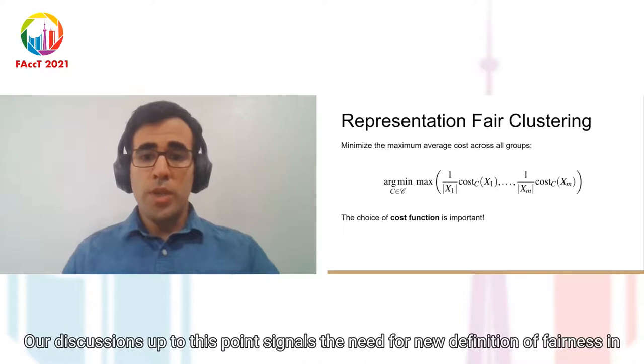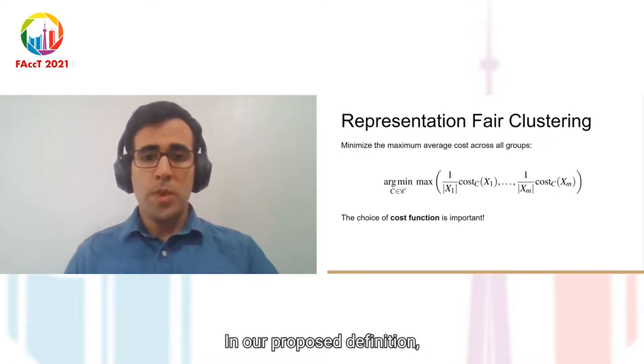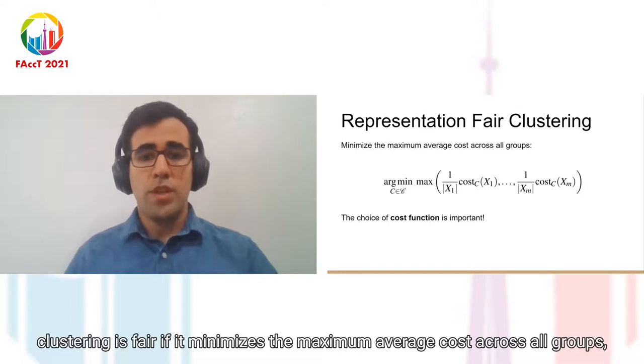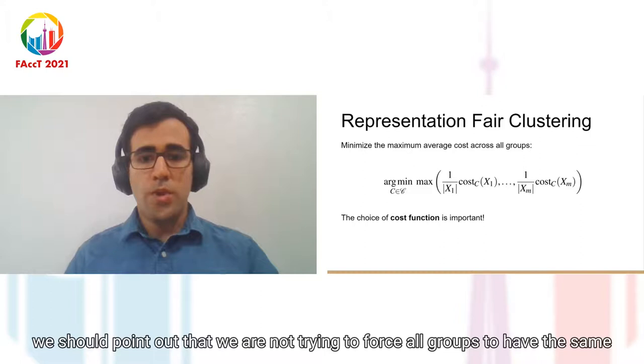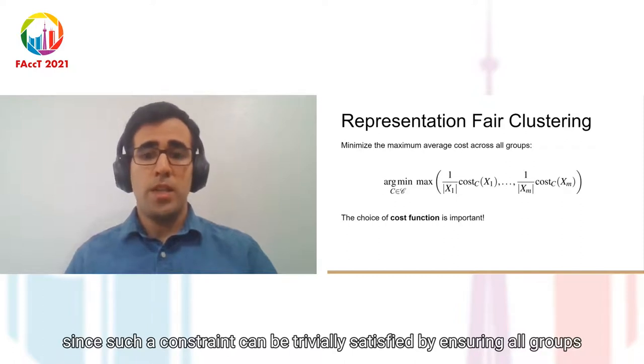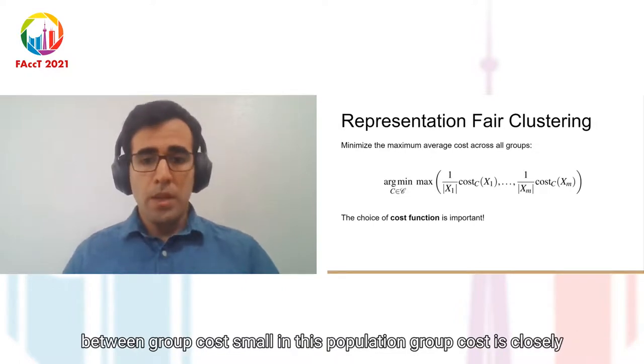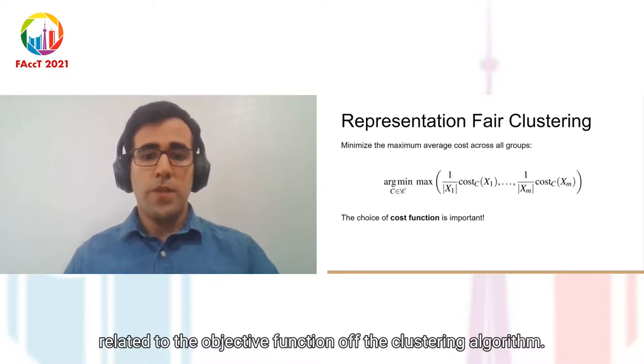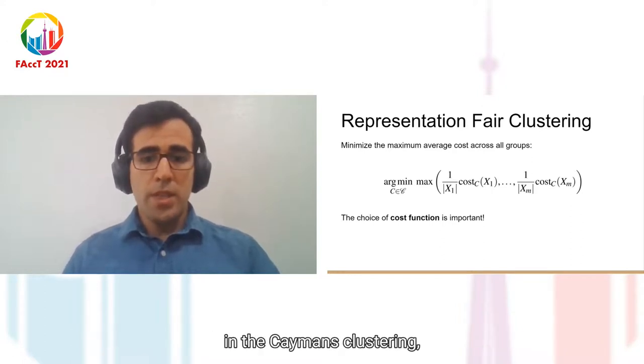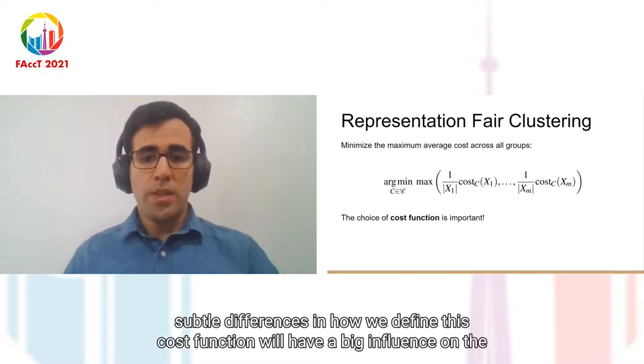Our discussions up to this point signals the need for a new definition of fairness in clustering where representativeness is a desired property. In our proposed definition, clustering is fair if it minimizes the maximum average cost across all groups. We should point out that we are not trying to force all groups to have the same representation cost, since such a constraint can be trivially satisfied by ensuring all groups to have poor representations. Rather, we want to ensure all groups have good representations while keeping the gap between group costs small. In this formulation, group cost is closely related to the objective function of the clustering algorithm. For example, in the k-median cluster, it could be sum of the square distances to cluster centers for each group. But, as we will see, subtle differences in how we define this cost function will have a big influence on the final clustering.